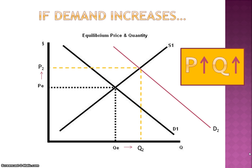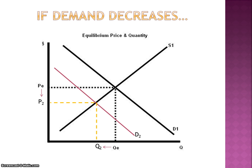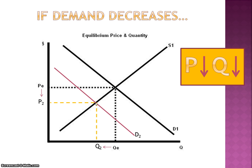If demand decreases, our equilibrium is going to shift to the left and down on the graph. The price drops and the equilibrium quantity also decreases. So we can say that when demand decreases, price and quantity both decrease in the market, and that's always going to be true.